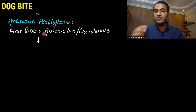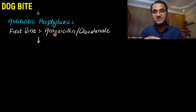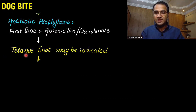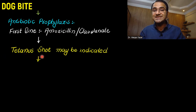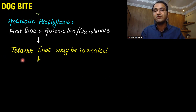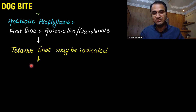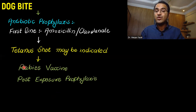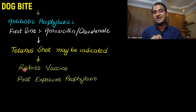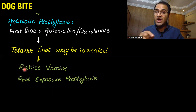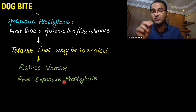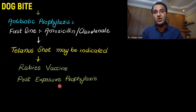The first-line drug for antibiotic prophylaxis is amoxicillin with clavulanic acid. After that, if the patient did not get a tetanus shot in the last 5 years, you have to give tetanus prophylaxis as well. After that, you have to decide whether to give rabies vaccine or not — whether you have to give post-exposure rabies prophylaxis or not.